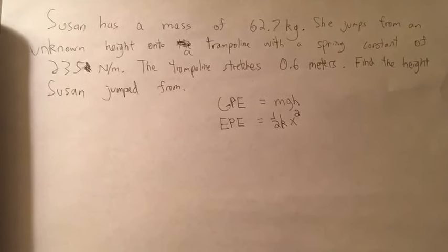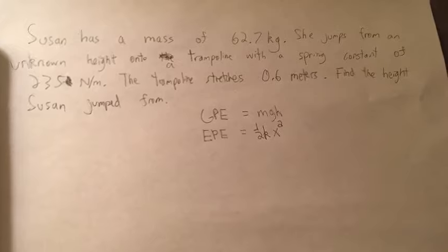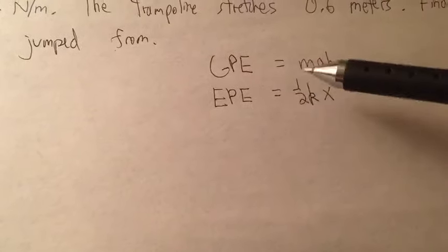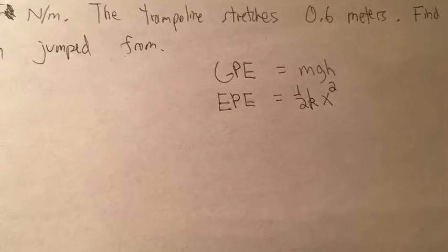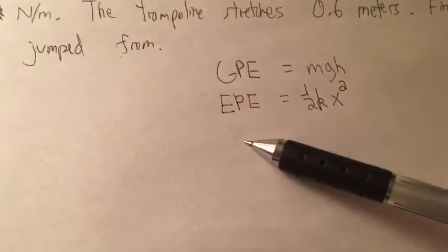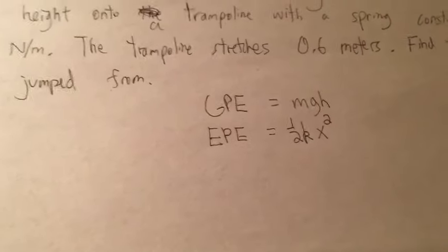She wants to know the height that she jumped from. So in this problem we will be utilizing two equations. The first being gravitational potential energy equals mass times gravity times height.